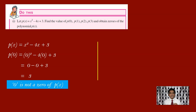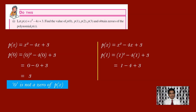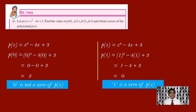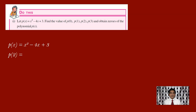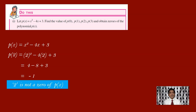Since the polynomial value is 3 and not 0, 0 is not a zero of p of x. Let us find p of 1. Wherever there is x, you have to write 1. So 1 square minus 4 into 1 plus 3. 1 square is 1, minus 4 into 1 is minus 4. So you have 1 minus 4 plus 3, which gives minus 3 plus 3, equal to 0. So the polynomial value is 0, which means 1 is a zero of p of x. Now p of 2: 2 square minus 4 into 2 plus 3. 2 square is 4, 4 twos are 8. So 4 minus 8 plus 3 gives minus 4 plus 3, which is minus 1. Since it is not 0, 2 is not a zero of p of x.